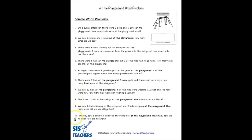The last three problems — eight, nine, and ten — are designed to be higher-order thinking questions. They might not just ask how many children are on the swings; they might ask things like how many eyes do we see or how many legs do we see. These are offered for students to go a little bit deeper with the concepts when some of the part-part-total problems become a little bit too easy.